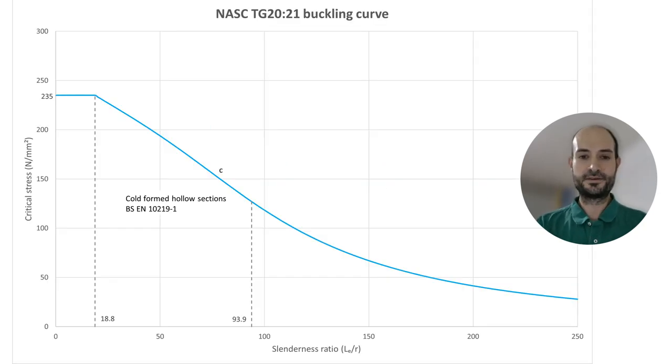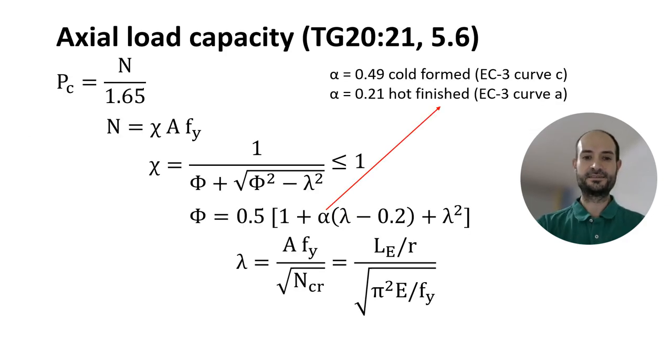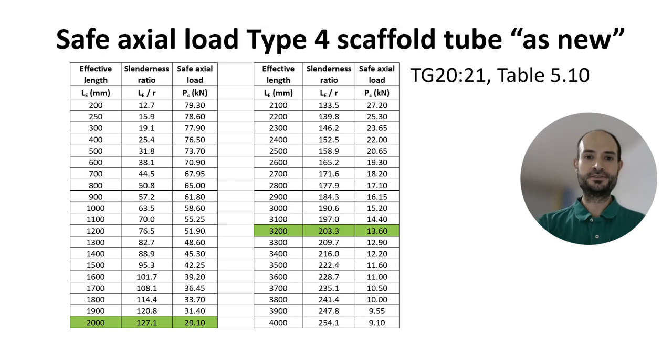I also showed you different curves for buckling, from Euler's up to today, to Eurocode 3, and we will only use this one for cold form hollow sections, for tubes, scaffold tubes. Now to obtain this graph, there are several equations on TG20 and Eurocode 3, but as I said, we are not going to use them because we have already some tables on TG20 that already provide the critical axial load for different effective lengths.